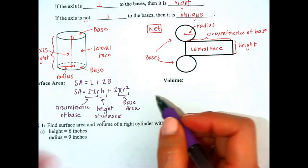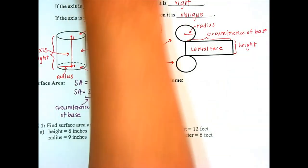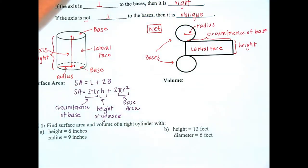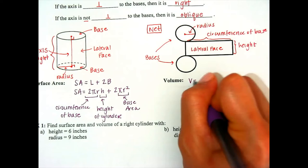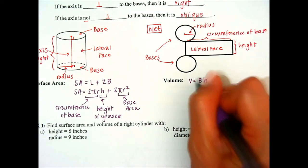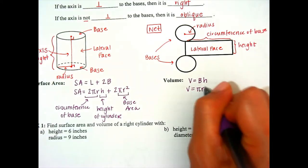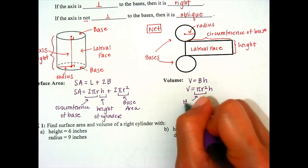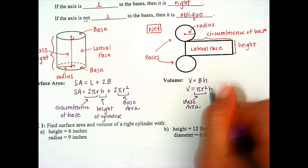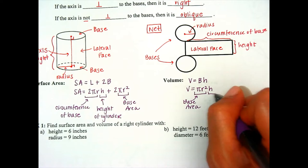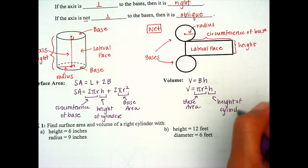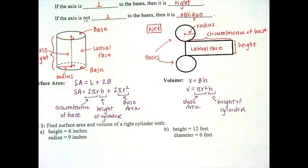When we're looking for volume, you just need to take the area of one base and then multiply it by the height. The base is a circle, so the volume formula is πr²h. The πr² part is the base area, and then you multiply that by your height.